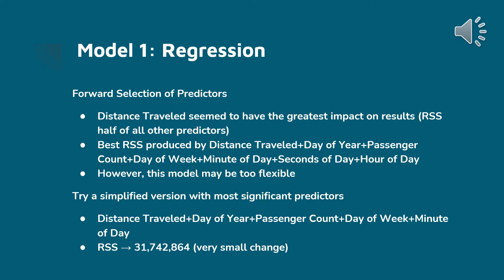Initially, we started with each predictor on its own and walked through a forward selection to determine the best fit of predictors. We noticed that distance traveled really cut the RSS in half compared to all the other predictors, so this seemed to be the most significant and was the first one chosen. We saved this as its own model to model just distance traveled to fare amount.